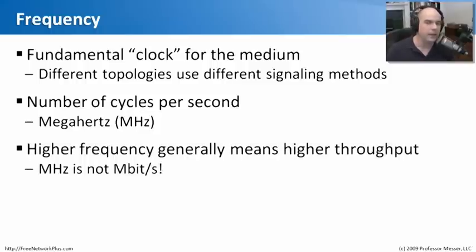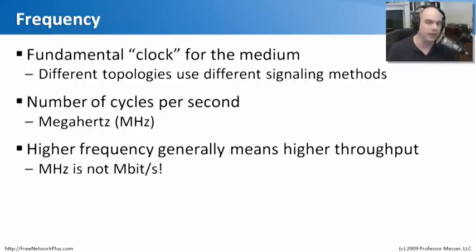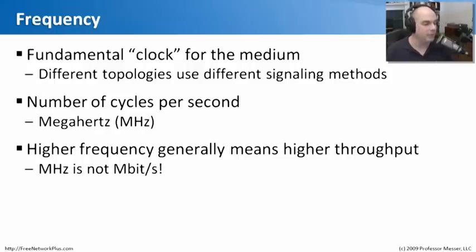A higher frequency generally means you're going to be able to send more traffic across the network. But keep in mind that the throughput of your network, usually measured in megabits per second or gigabits per second, is different than the frequency or megahertz used to send that information. Sometimes the megahertz is more than the megabits that can be transferred, and sometimes it's the other way. The frequency is the clock — it has nothing to do necessarily with how much traffic you're sending, only how often each side is able to stay in synchronization.